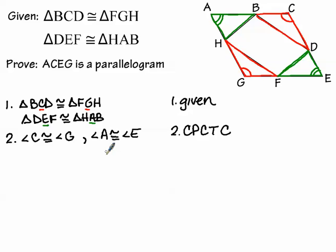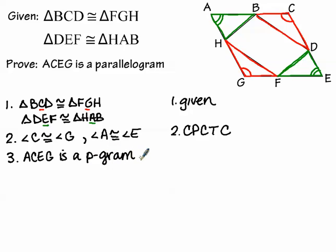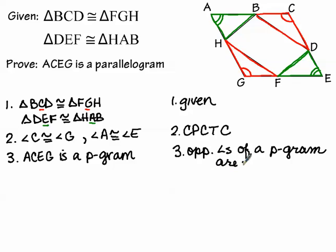Looking at quadrilateral ACEG, we now have two pairs of opposite angles that are congruent: angle C and angle G are one pair, and angle A and angle E are the second pair. Because both pairs of opposite angles are congruent, we can state that ACEG is a parallelogram — the reason being that opposite angles of a parallelogram are congruent.